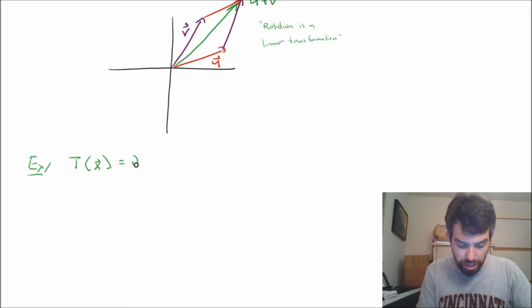Namely, this is the one which is dilation by a factor of 2 or stretching by a factor of 2. It takes every vector x and it multiplies it by 2.